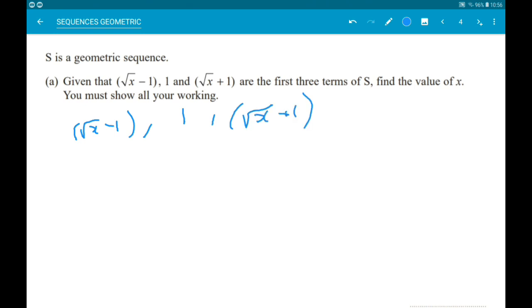Now, that then means, what we are multiplying by, is root x add 1. That then tells us, that root x minus 1, times root x add 1, is 1.